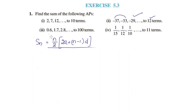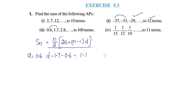Third question. First term A is 0.6. D is: A2 minus A1, which is 0.7 minus 0.6, equals 0.1. N is 100. We need to find S100.